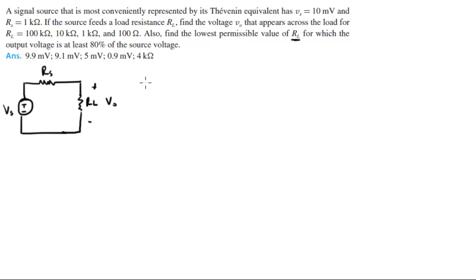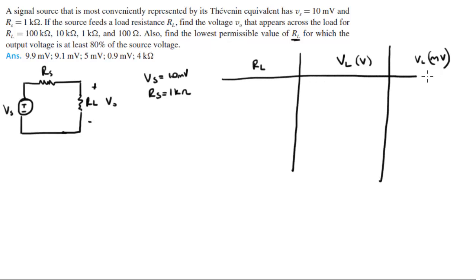So you know that VS is equal to 10 mV and you know that RS is equal to 1K ohms, and then they're going to give you all these different values. So what I'm going to do is I'm going to build a little table, so we got RL, different values of RL, and then we got different values of VL in volts and VL in mV. We need to find VO for all these different values of RL. RL can be either 100K, it can be 10K ohms, it can be 1K, or it can be simply 100 ohms.